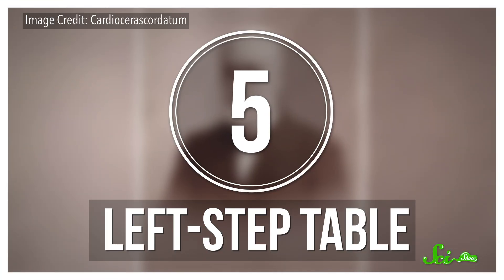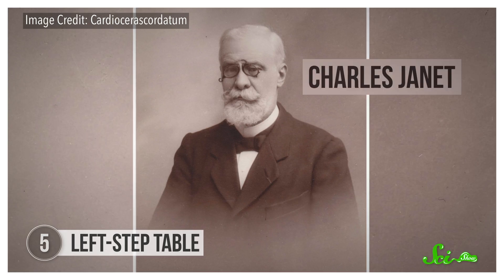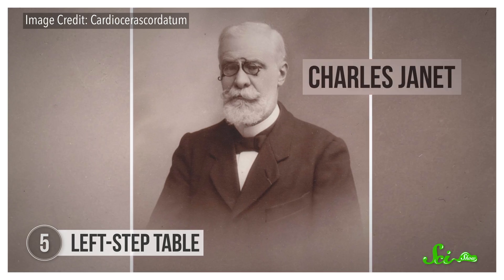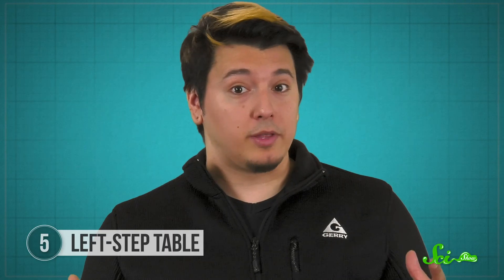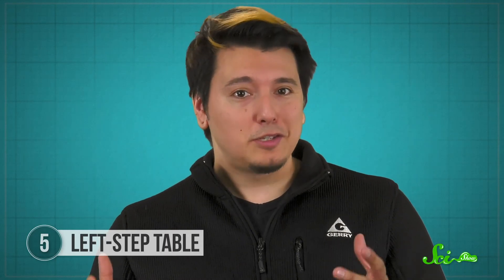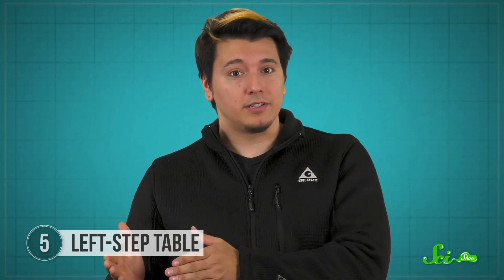Odd as they look, these designs do address one other concern: they bring the orphan lanthanides and actinides back into the fold. The table that's had the most influence on our modern version was probably the one put together by French engineer Charles Genet around 1928. It's often called the left step table, and it's a particular favorite of physicists. When read from top to bottom and left to right, it gives the exact order in which electrons fill up an atom's available energy shells. Knowing how many electrons an element has in its energy levels can help predict its chemical properties, and some of its physical ones as well, like its magnetic behavior.